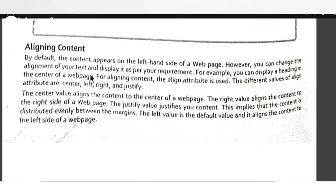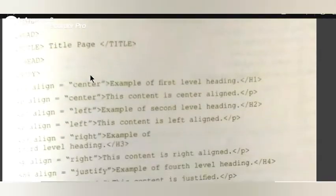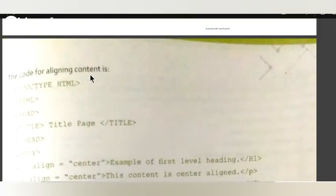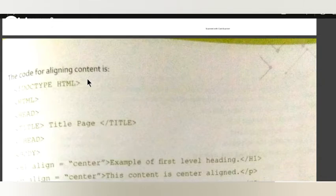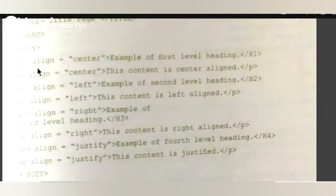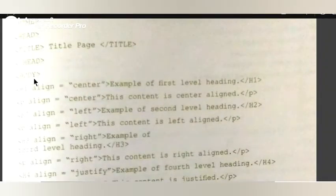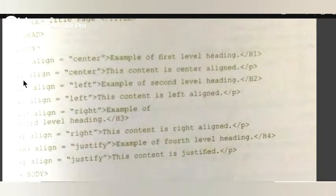So this is alignment of content. Next, here is some coding. The image may not be clear, so I will send it to you via WhatsApp and you can see it on your mobile. In the code: head, body, H1 with align center — 'Example of the first level heading', close H1, next is a paragraph tag — 'This is the paragraph'.